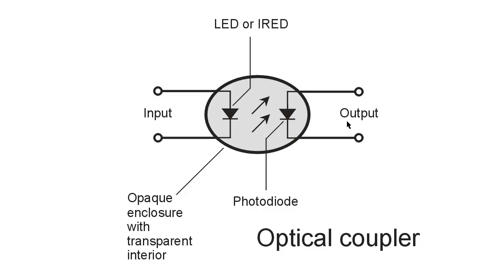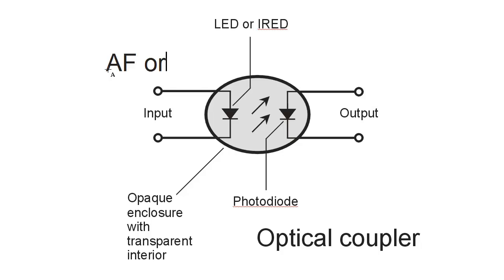So you get an output signal that looks very much like the input signal. Now you might wonder: what is the point in doing this? Why would we want to convert, say, a radio frequency or audio frequency signal? We might have AF or RF.